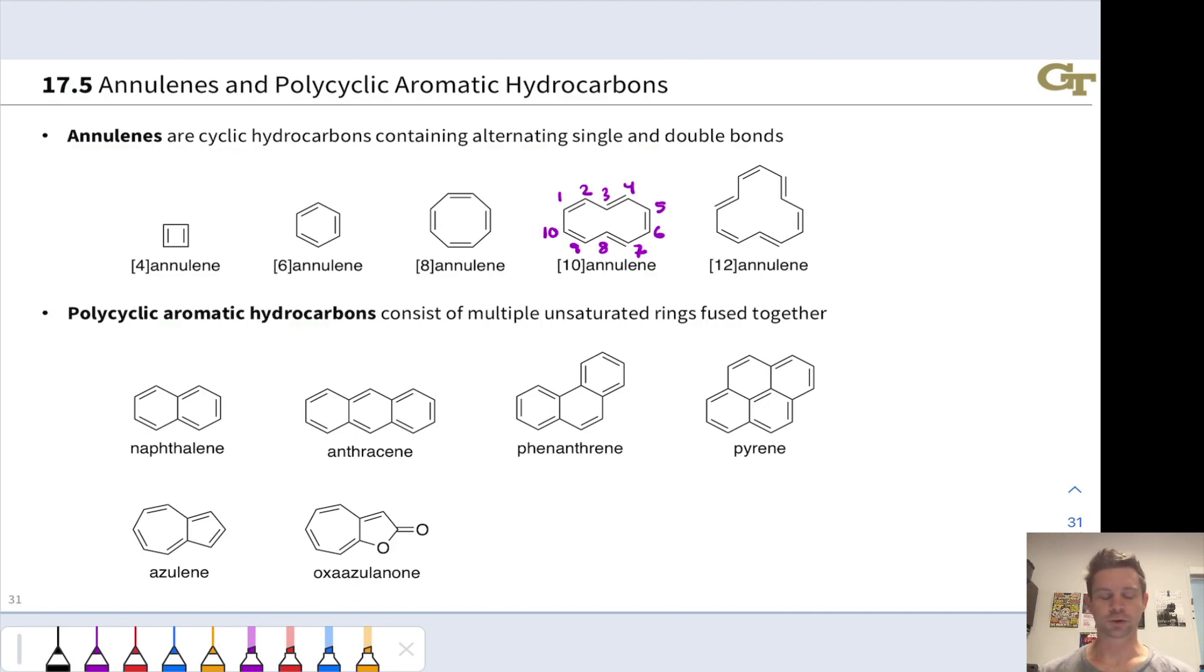Polycyclic aromatic hydrocarbons contain more than one aromatic ring fused together. By fused here, we mean that two rings are sharing a bond. For example, naphthalene looks like two benzene rings fused together, with this bond highlighted in purple shared between the two benzene rings. Naphthalene is aromatic, and that's worth verifying on your own. It is cyclic, fully conjugated, planar, and contains a Huckel number of 4n+2 pi electrons.